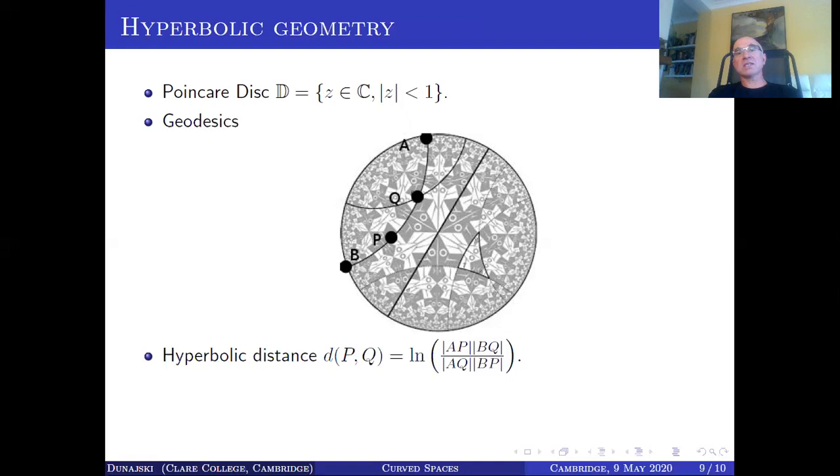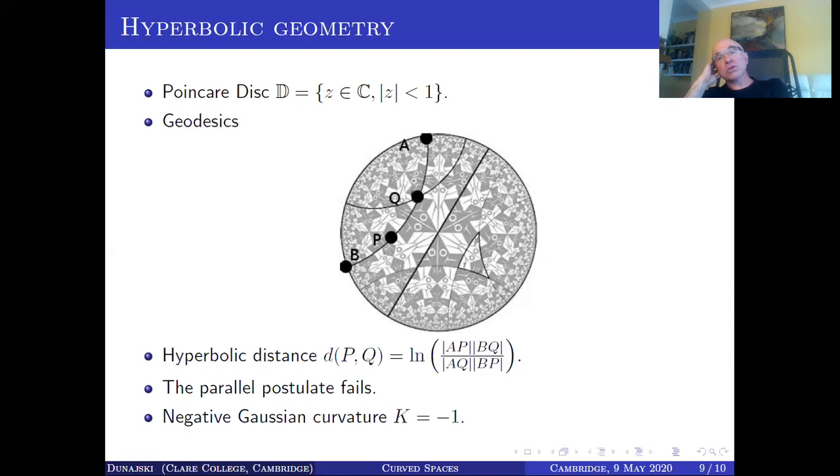So, so this, you know, you can check that all the four axioms of Euclid, the first four axioms are satisfied for this model, but the parallel axiom is not. Because, let's say with a point Q, you'll see that there are two lines, this one and that one, two geodesics on the disk, which go through Q, and they don't intersect this geodesic, which doesn't go through Q. In fact, there are infinitely many parallel lines, well, lines which are parallel to the diameter, which go through Q, but don't intersect the diameter. So that's a non-Euclidean geometry for you. The parallel postulate fails, and the Gaussian curvature, if you wanted to look at the triangles on this disk model, you would find that its angles add up to something less than 180 degrees. And in fact, its Gaussian curvature is negative and everywhere equal to minus one.